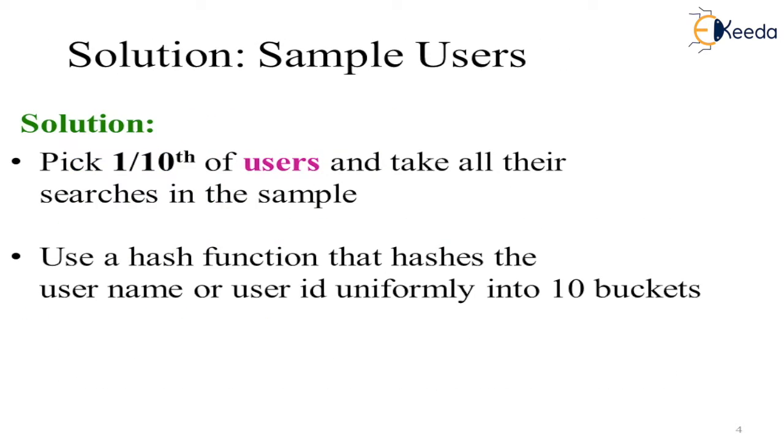Another solution is pick up 1 tenth of users only. Out of all users, we will take few users. That is one user from every 10 users, rather than elements. Take all their searches in the sample. We will take the samples for that particular user. Use a hash function that hashes the user name or user id uniformly to 10 different buckets.